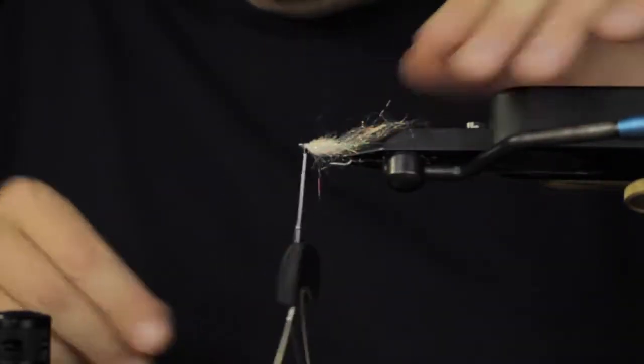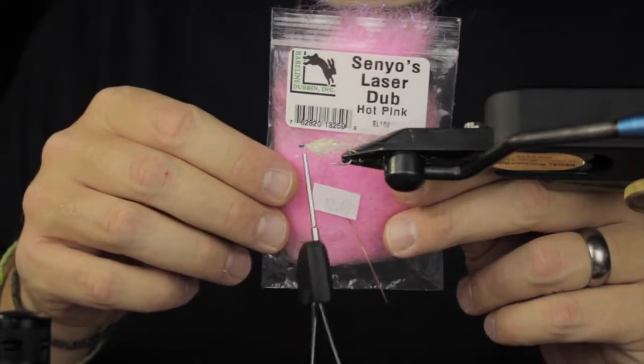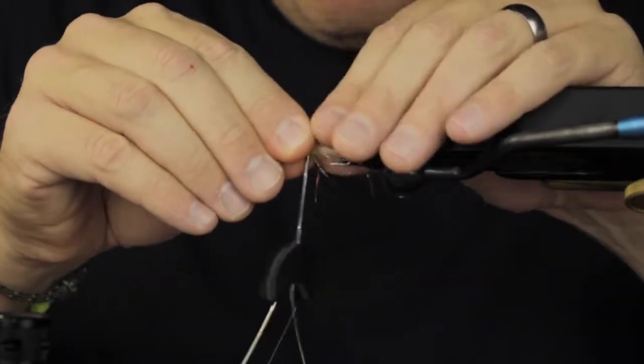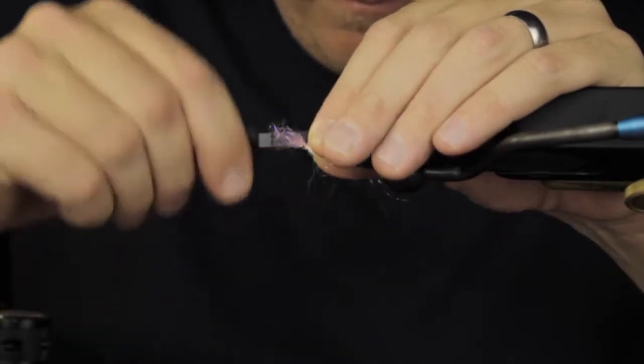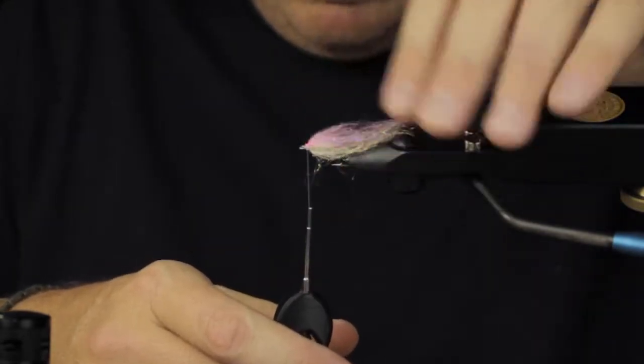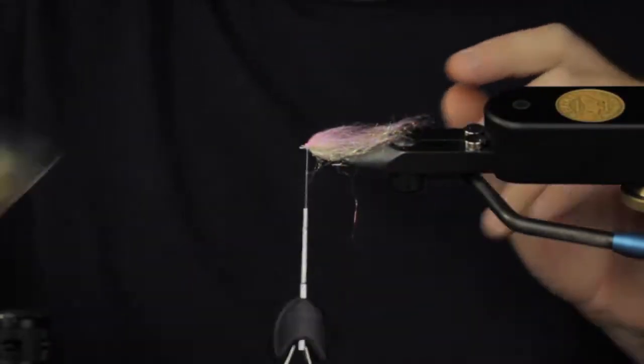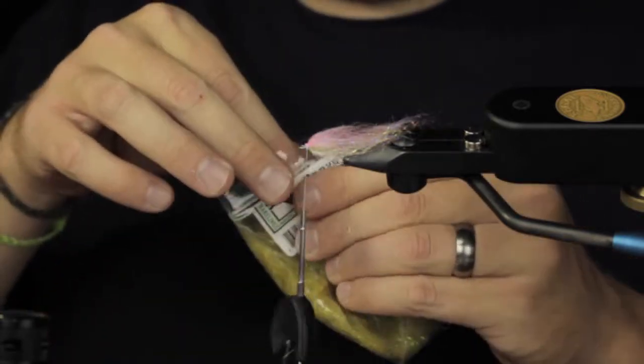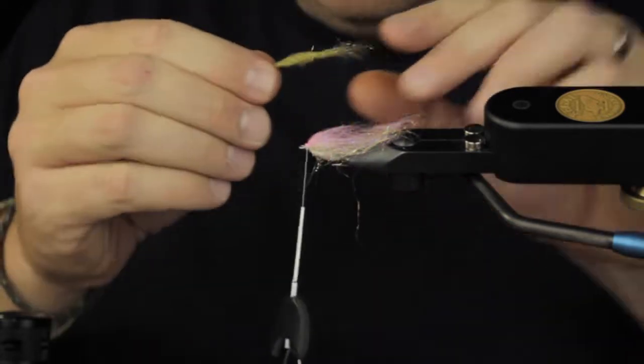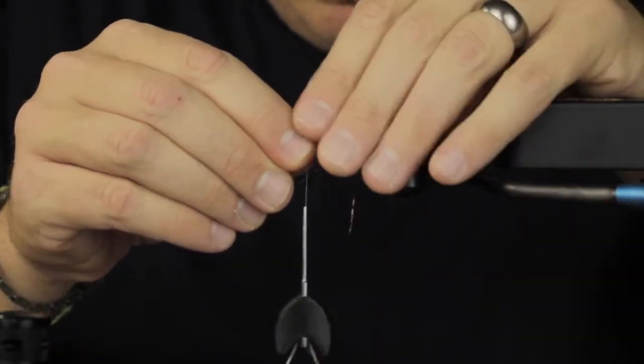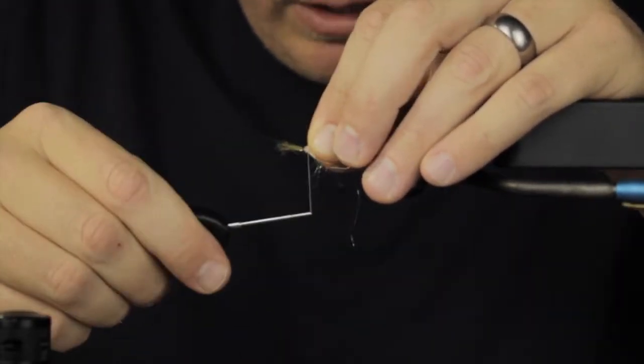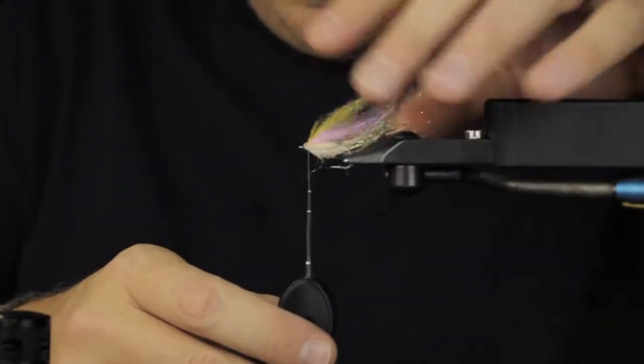We're going to zap it in there nice and tight like so and that's going to form the belly of this pattern. Some of it will pop out, that's perfectly fine. I'm going to bring in some senyo's ice dub, this happens to be a pink color that's going to be my next layer. I'm going to come into a light olive color and again this is just going to be a pinch. I want it just to be a transitional color here, I don't want it to completely overpower anything and we'll tack that in.